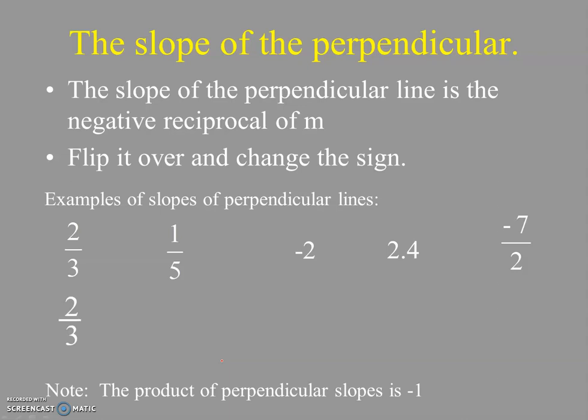The slope 2/3—you would flip it and change it to the opposite sign: negative 3/2. The slope 1/5, you flip that, you're going to get 5/1 with a negative, which we would simplify to negative 5.